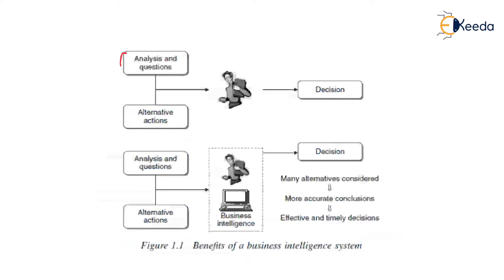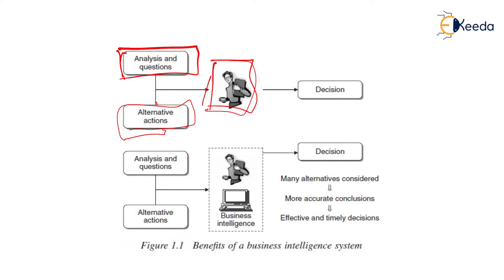See this diagram — we are doing analysis on the data, and on the basis of that we form a questionnaire. On the basis of that questionnaire, a decision maker takes a proper decision. If alternative actions are present, those are also sent to the decision maker. But this process is totally manual — if that person changes, the decision may also change.